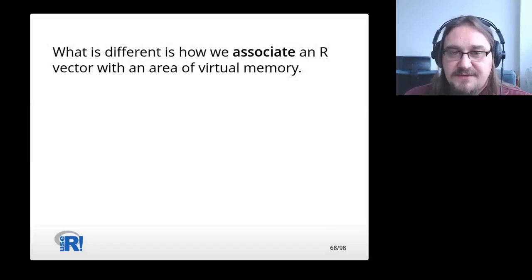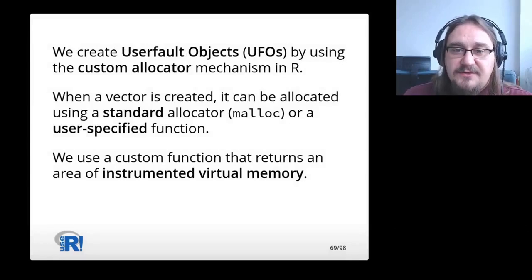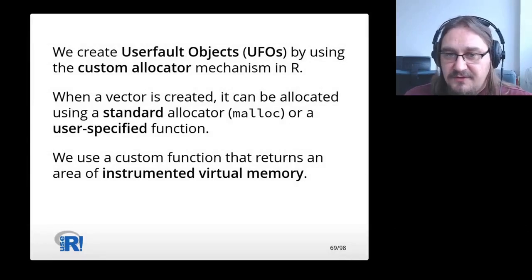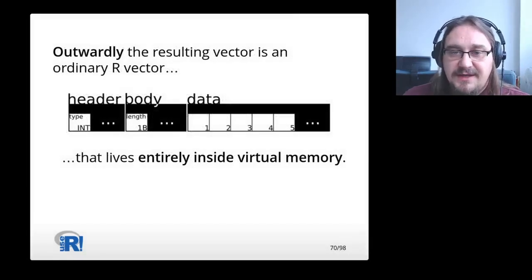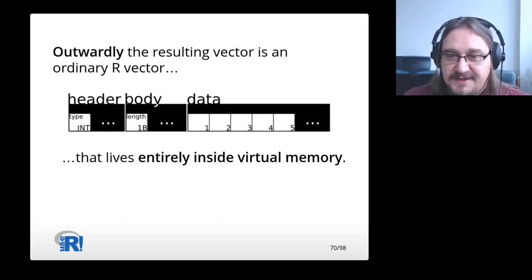What is different is how we associate an R vector with an area of virtual memory. We create UserFault objects, or UFOs, by using the custom allocator mechanism in R. When a vector is created, it can be allocated using a standard allocator, like malloc, or a user-specified function. We use a custom function that returns an area of instrumented virtual memory. Outwardly, the resulting vector is just an ordinary R vector that lives entirely inside virtual memory.